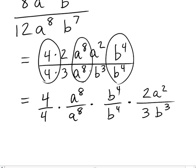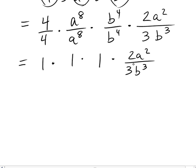So this single fraction above is the product of these four fractions. Remember, multiplication is commutative, so it doesn't matter what order you put your factors in. And now each one of the first three fractions is equal to 1. That's why those cancel. It's because they're dividing out to a 1. And when you multiply all these together, you simply get 2a squared over 3b cubed.